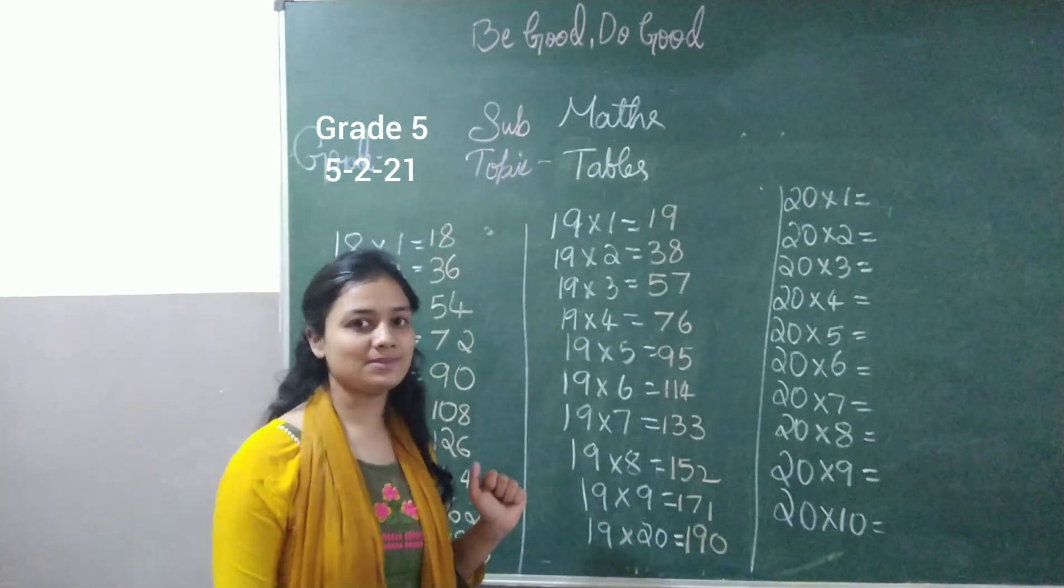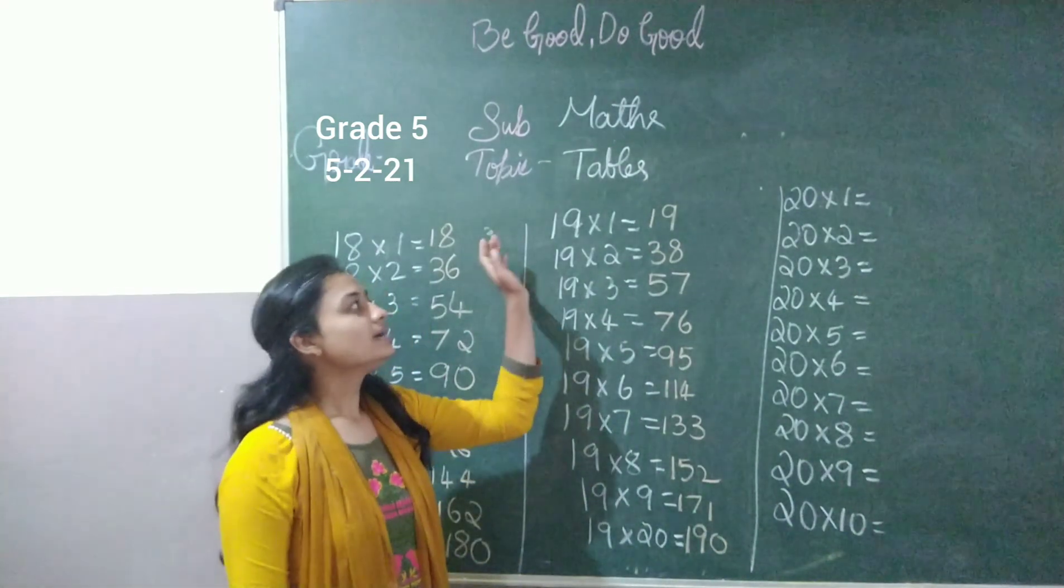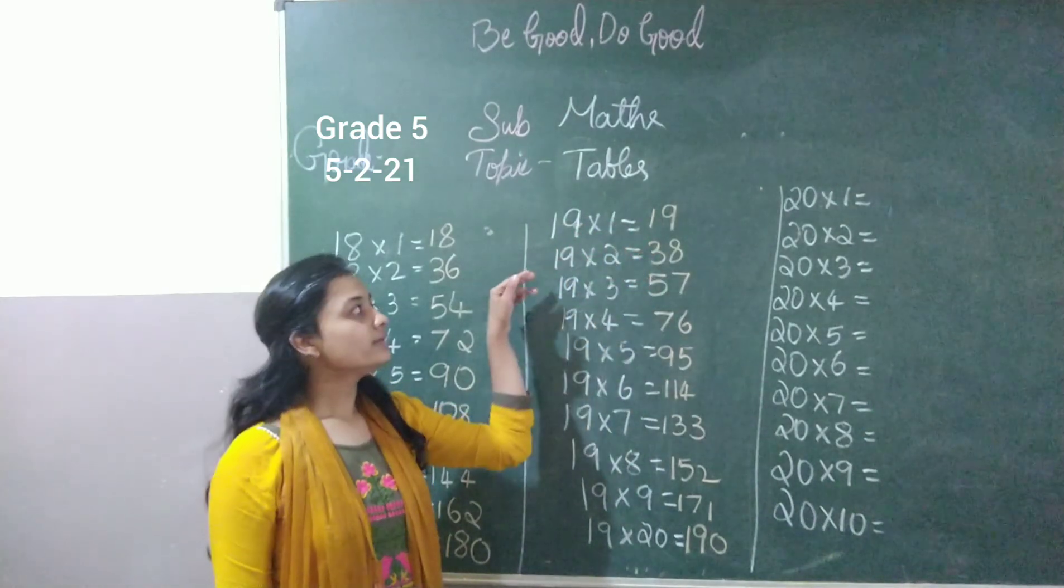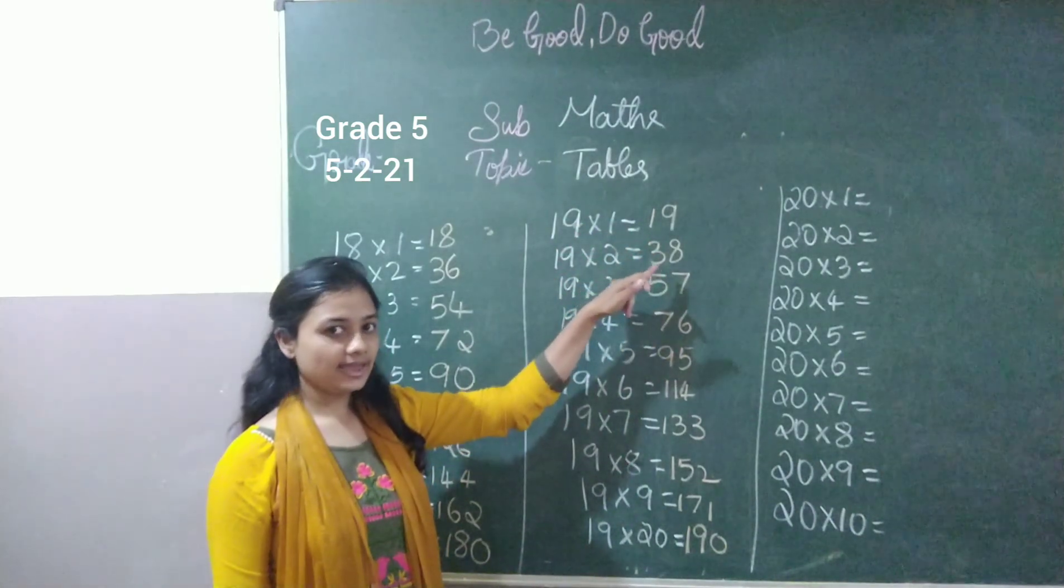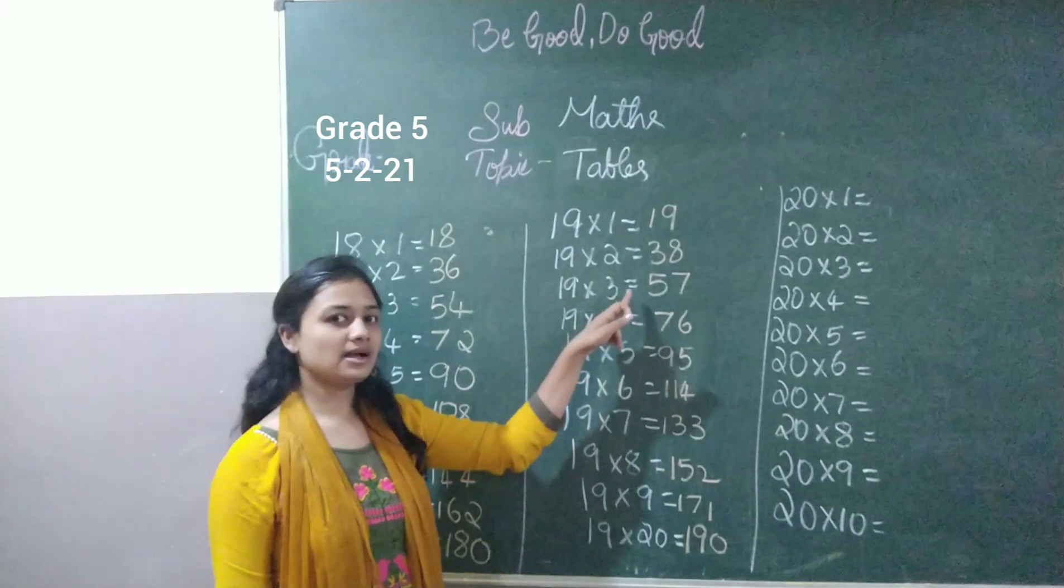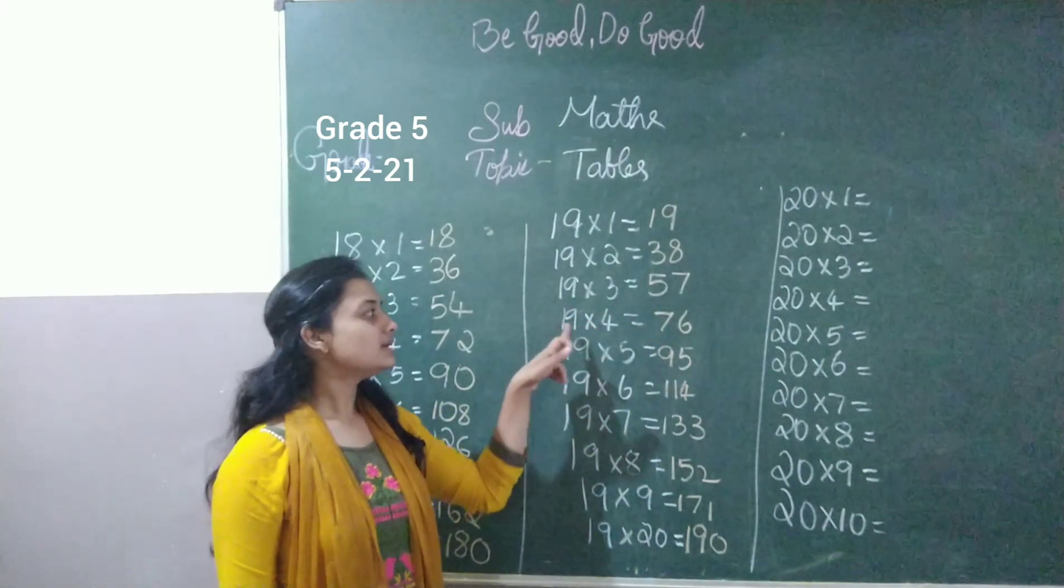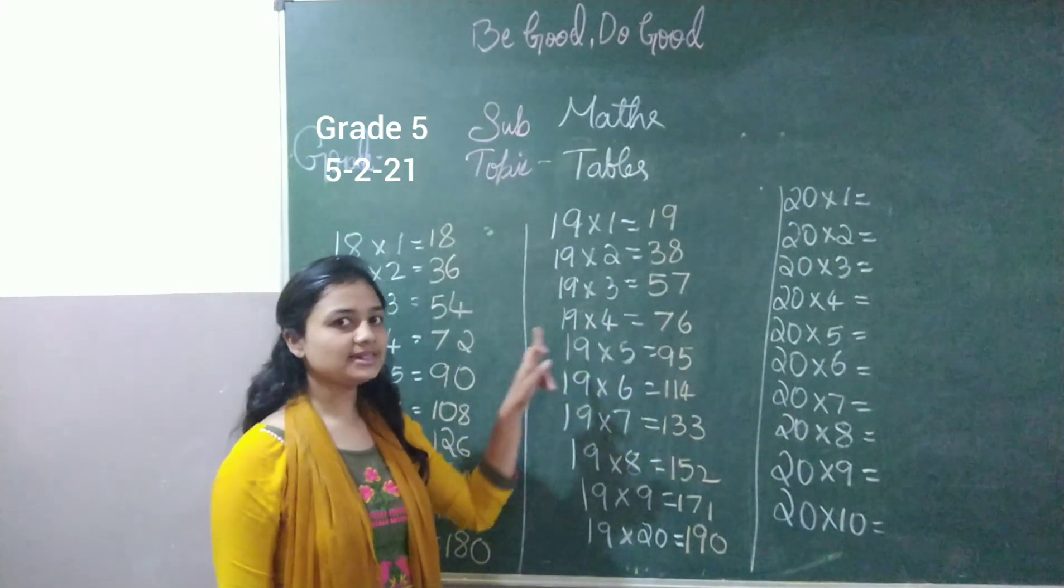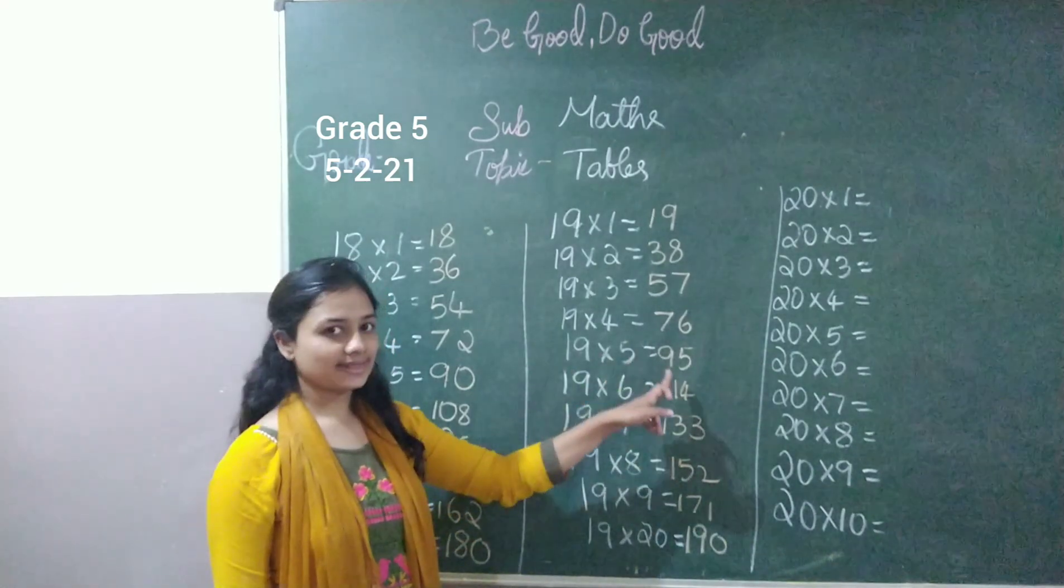So this is 19 tables. Let's say 19 tables once. Repeat here. 19 times 1 is 19. 19 times 2 is 38. 19 times 3 is 57. 19 times 4 is 76. 19 times 5 is 95.